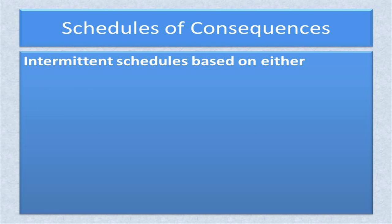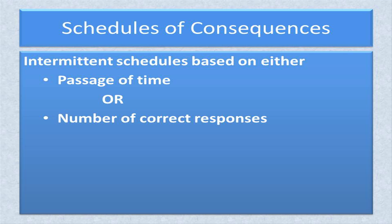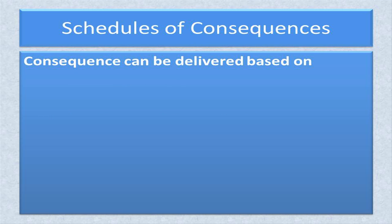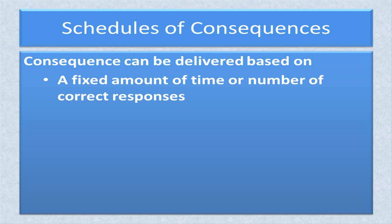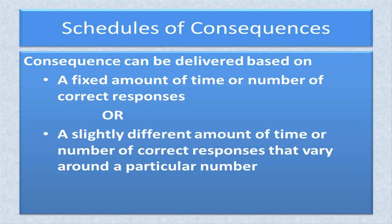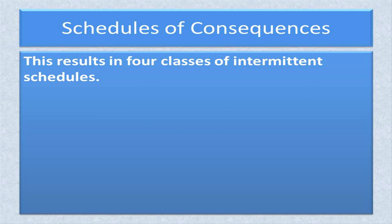While a continuous schedule is always based on the frequency of the response, an intermittent schedule may be based either on the passage of time or the frequency of the emitted target behavior. Because intermittent schedules are only recommended for increasing behavior, it means that the number of correct responses is counted. Additionally, the consequence may be delivered based on a fixed amount of time, a fixed number of correct responses, or a slightly different amount of time or number of correct responses that vary around a particular number. This results in four classes of intermittent schedules.